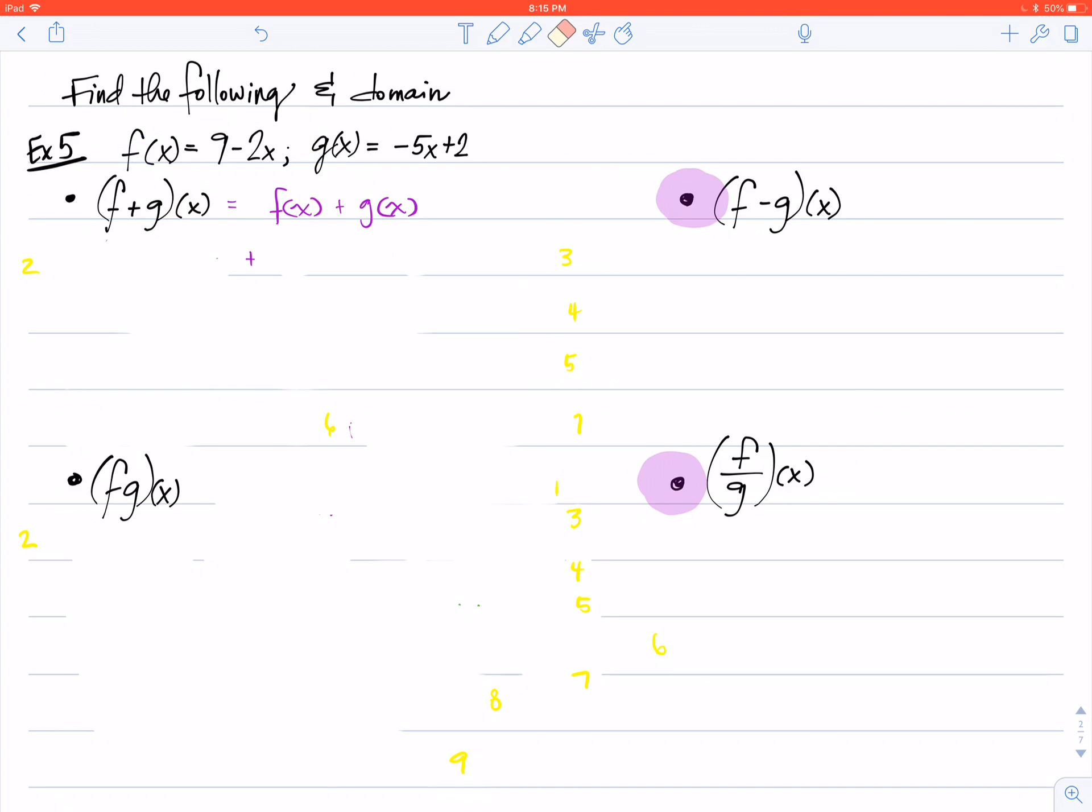We know what f of x is, we were handed f of x, so let's simply take it and plug it in: 9 minus 2x. We know what g of x is, take it, plug it in: negative 5x plus 2. You'll notice that I'm using the brackets here. It just keeps things separated for me and keeps me from making mistakes that I shouldn't make.